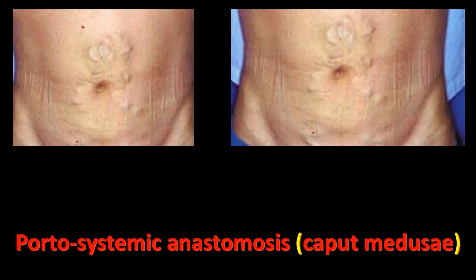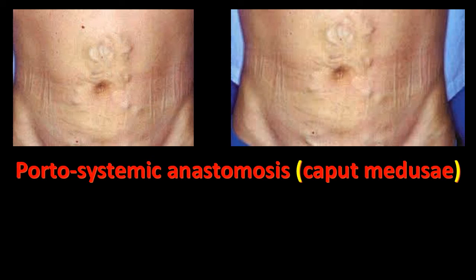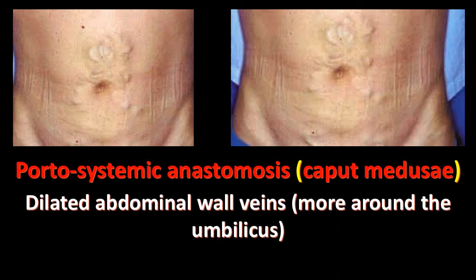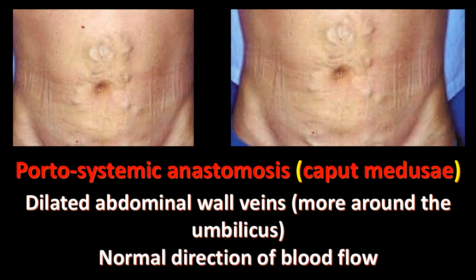These are patients having portal hypertension and portosystemic anastomosis — caput medusae — with dilated abdominal wall veins more around the umbilicus. In superior vena cava obstruction, the dilated veins are more upward on the chest wall and neck, in addition to abdominal veins. In inferior vena cava obstruction, the dilated anterior abdominal wall veins are more in the lower half. In portal hypertension, the veins are dilated around the umbilicus with normal direction of blood flow and no reversal of direction.